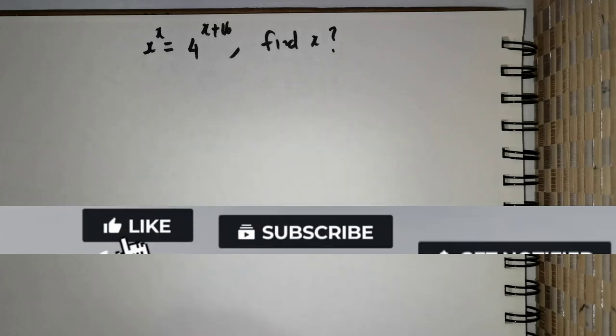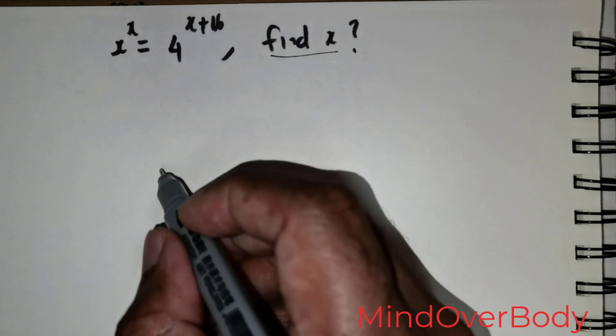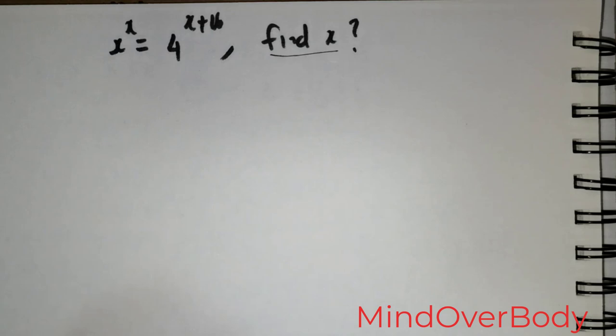Welcome students. We have been given this question: x raised to the power x is equal to 4 raised to the power x plus 16. We are expected to find the value of x. I'm going to show you three different ways by which you can solve this question and extract the value of x.